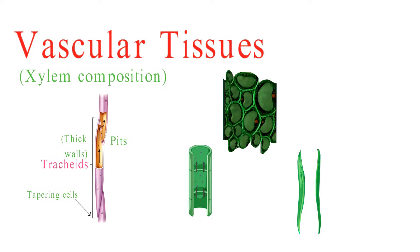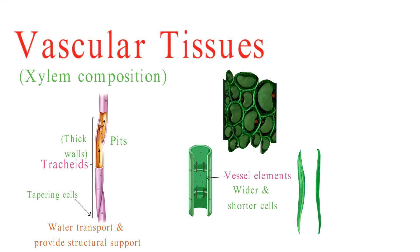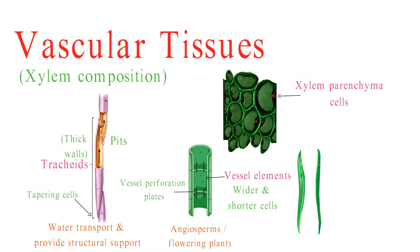These cells are highly specialized for water transport and provide structural support to the plant. Vessel elements, on the other hand, are wider and shorter cells with perforated end walls. These perforations, called vessel perforation plates, allow for more efficient water flow between cells. Vessel elements are characteristic of angiosperms, or flowering plants. Xylem parenchyma cells are associated with the xylem and are often found interspersed among the tracheids and vessel elements. Unlike tracheids and vessel elements, xylem parenchyma cells retain their nuclei and are involved in various metabolic functions, including storage and repair.